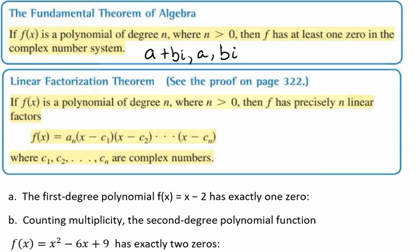We have this equation where it says f(x) = a_n(x - c_1)(x - c_2)...(x - c_n), where c_1, c_2, all the way to c_n are complex numbers.